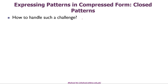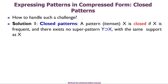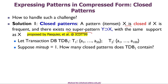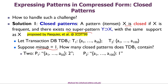To handle this challenge of a large number of sub-patterns, one interesting proposal is the concept of closed patterns. We say X is a closed pattern if X is frequent and there exists no super-pattern of X with the same support as X. Looking at the same TDB1 example with minimum support 1, instead of 2^100 − 1 patterns, we only want to find 2 closed patterns: P1 and P2.